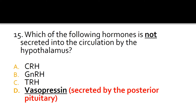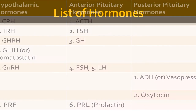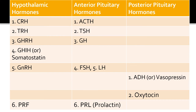Vasopressin is synthesized in the hypothalamus but secreted into the circulation from the posterior pituitary. Important hypothalamic, anterior pituitary, and posterior pituitary hormones are listed in this slide — those who are interested can pause and note down the details.